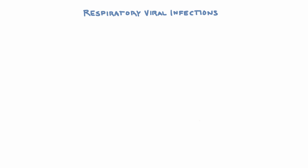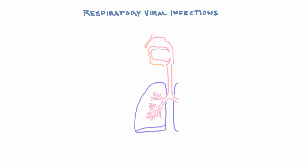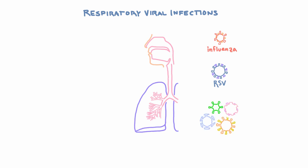In this unit, we're going to talk about respiratory viral infections. These are viral infections that infect the respiratory tract, shown here in pink. We're going to talk mostly about two of these — influenza and RSV — but there's a whole lot more, like human metapneumovirus, adenovirus, parainfluenza, rhinovirus, and coronaviruses. You don't need to remember all those names, just know that there's a lot.